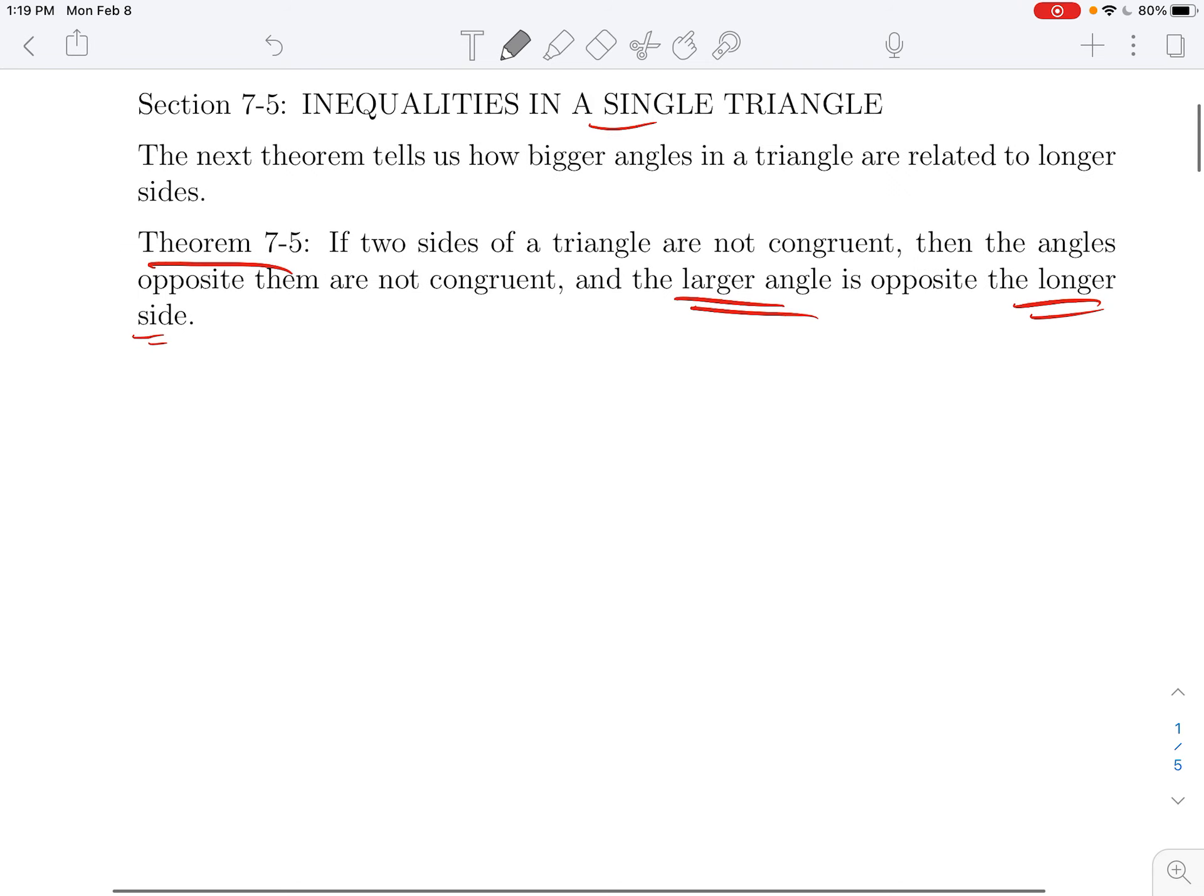So let's look at an example. Maybe I have a triangle like so. Here's ABC. And what we'll notice is that BC is bigger than AB. We see that pretty clearly in the diagram. Maybe I would have specific measures.